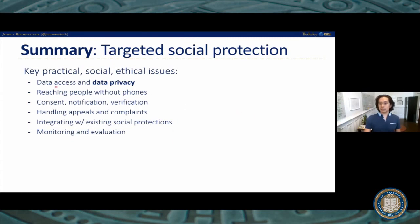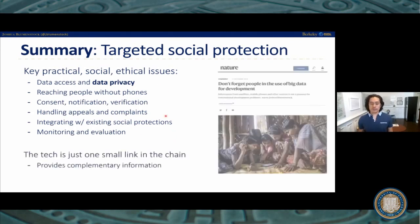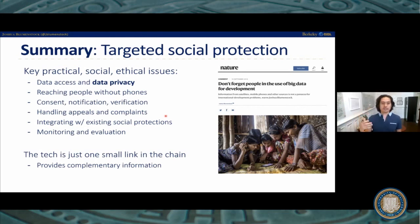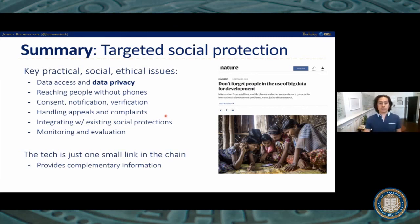To summarize: the key point is that these new data sources create options for targeting humanitarian aid. They are designed to complement existing programs and protections, not replace them. We think of these new data sources as providing a second safety net underneath the first one, helping catch exclusion errors — people who would otherwise be excluded from the traditional safety net. Any real-world program will have to grapple with deep practical and ethical issues. These technology-based approaches are just one small link in a much longer chain, and most of that chain is human-based. The hope is that big data, data science, and machine learning can provide missing and complementary information to help systems respond more effectively and quickly to humanitarian crises.